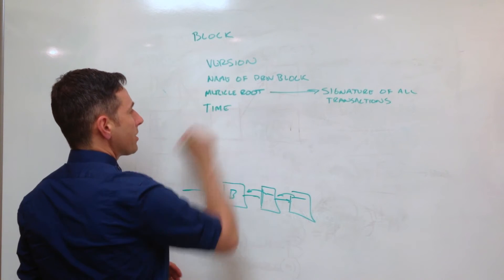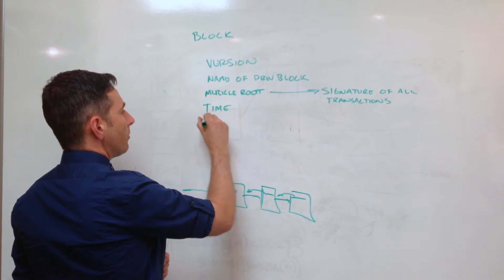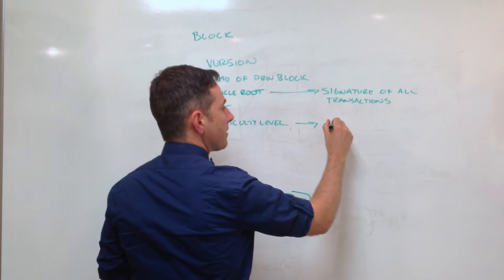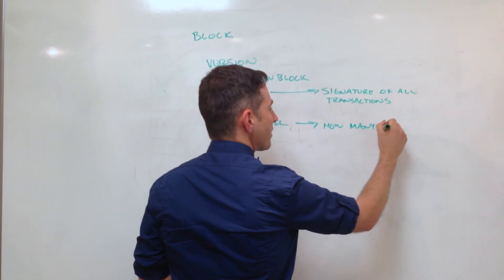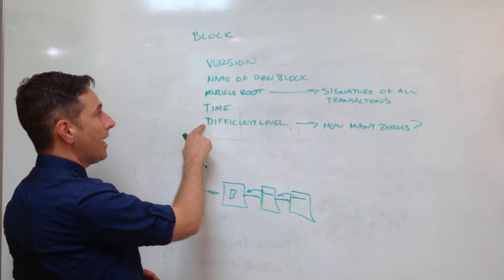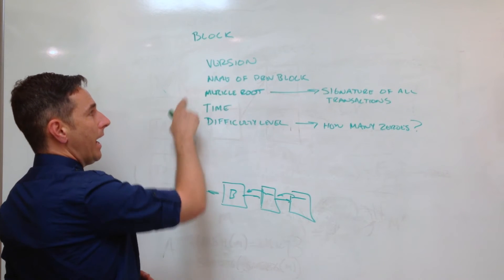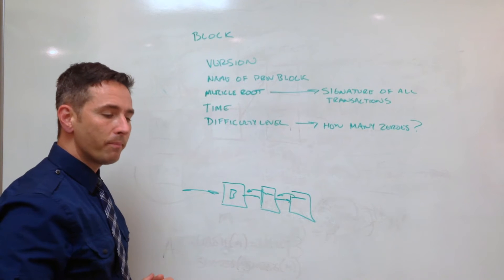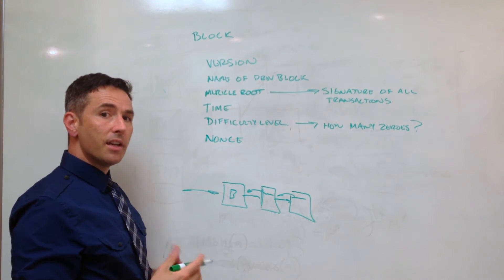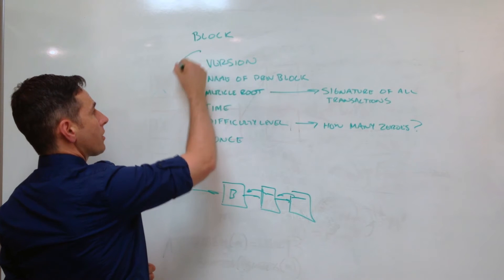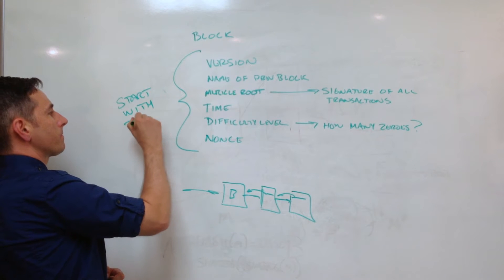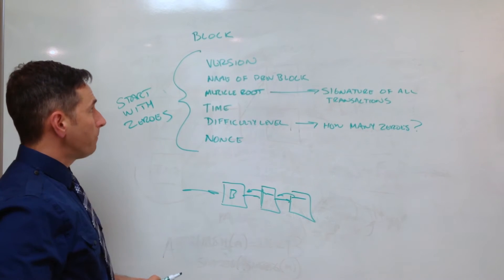The Merkle root is a specification of how to calculate that signature. The next thing you've got is the time at which this block was mined, and a difficulty level - this says how many zeros we're shooting for at the front of our signature. This will be verified by anyone that wants to accept this block as appropriate given the previous block, the current time, and our difficulty target. The last thing is the nonce - a number we choose that causes the signature of the block to start with the right number of zeros.